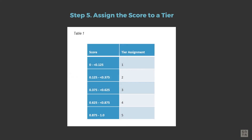The final step in the process is to assign a score to tiers. Each program's score will be between 0 and 1, with higher scores indicating likely better performance. Final tiers for the outcome assessment are assigned as shown in Table 1.